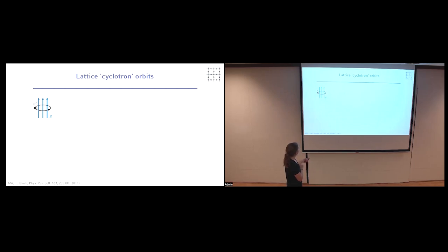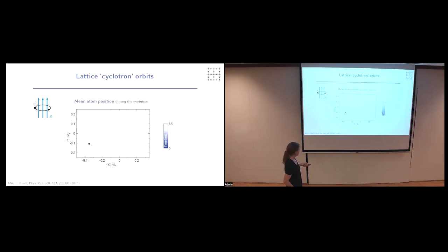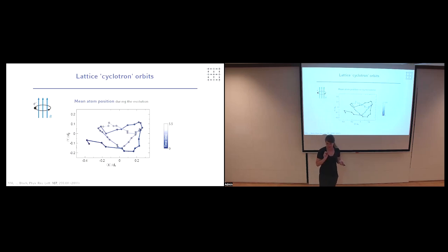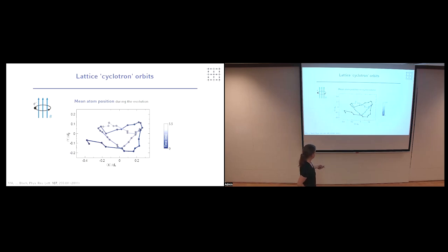This gives you a new tool allowing you to engineer Hamiltonians you don't just naturally get when loading atoms. The first thing you might look for to see if you've actually engineered something like a Lorentz force would be a cyclotron orbit — something we know for electrons and magnetic fields. This is an experiment done on a tiny plaquette of four sites — you put one atom in there and look at the dynamics to see if it forms a chiral orbit. We tracked this position and indeed see chiral motion. It's not a nice circle — partly because it's highly discretized with only four sites, and partly because this was an old experiment averaged over many plaquettes, leading to effective dephasing and damping.